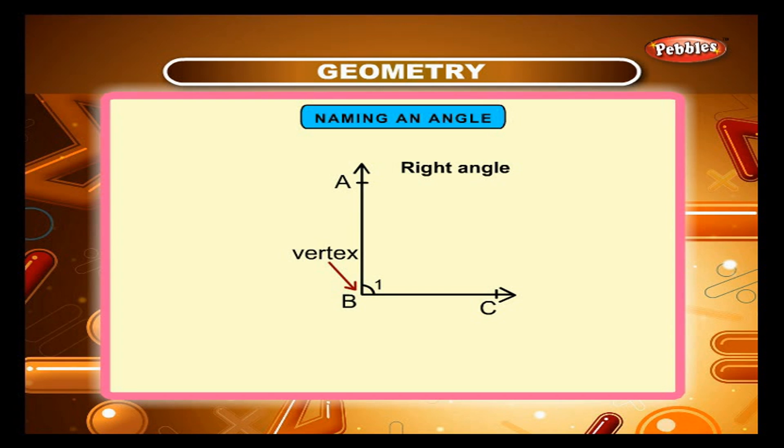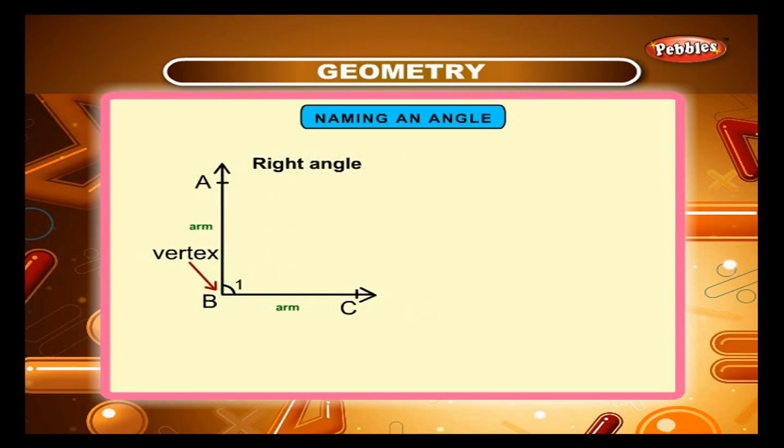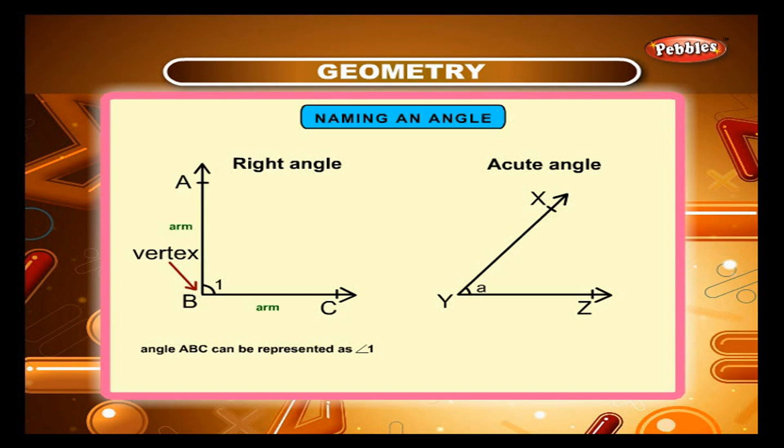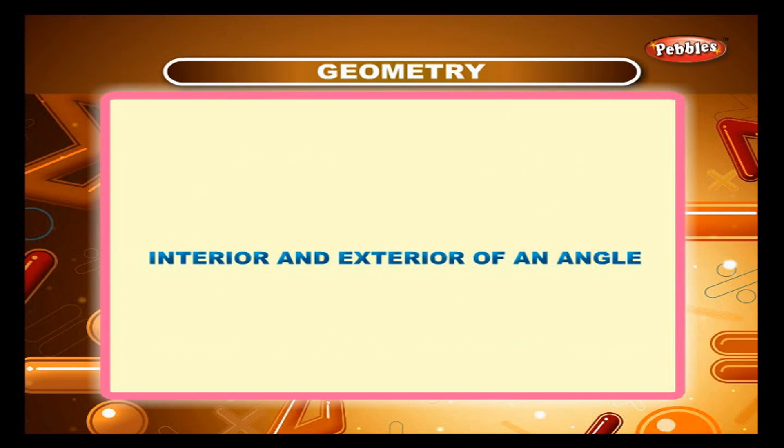BA and BC are the two arms. We can also name an angle in a different manner. Here, angle ABC can be represented as angle 1. Angle XYZ can be represented as angle A.